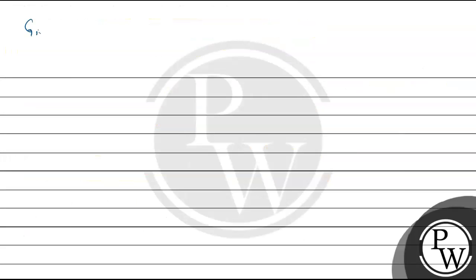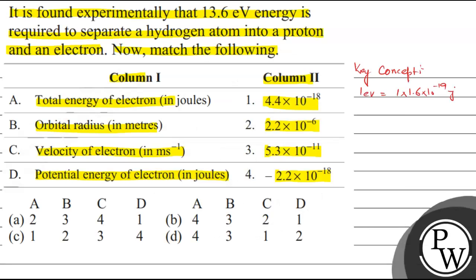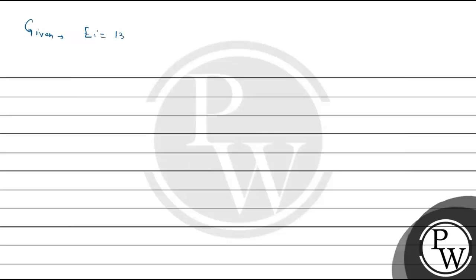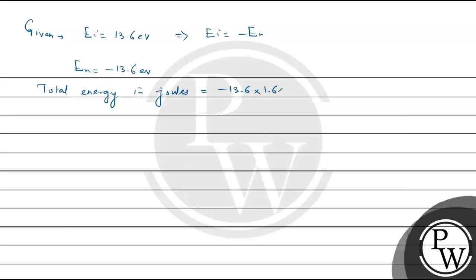Given that 13.6 electron volt energy is required to separate the hydrogen atom, the ionization energy E_I equals 13.6 electron volt. Since ionization energy equals minus the total energy, total energy E_N equals -13.6 electron volt, which gives total energy equal to -13.6 × 1.6×10⁻¹⁹ = -2.18×10⁻¹⁸ joules.